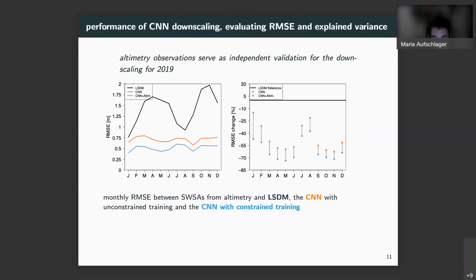For further performance evaluation, the altimetry observations serve as an independent validation for the downscaling. Here I show the monthly root mean square error between the altimetry based surface water storage anomalies and the LSDM forward simulated in black, the neural network downscaling after unconstrained training in orange and the downscaling after constraint training in blue throughout the year of 2019 again. The most important points we can extract from this plot are that the constraint training improves the downscaling ability by 10% and even up to 35% as it is emphasized in the right plot.